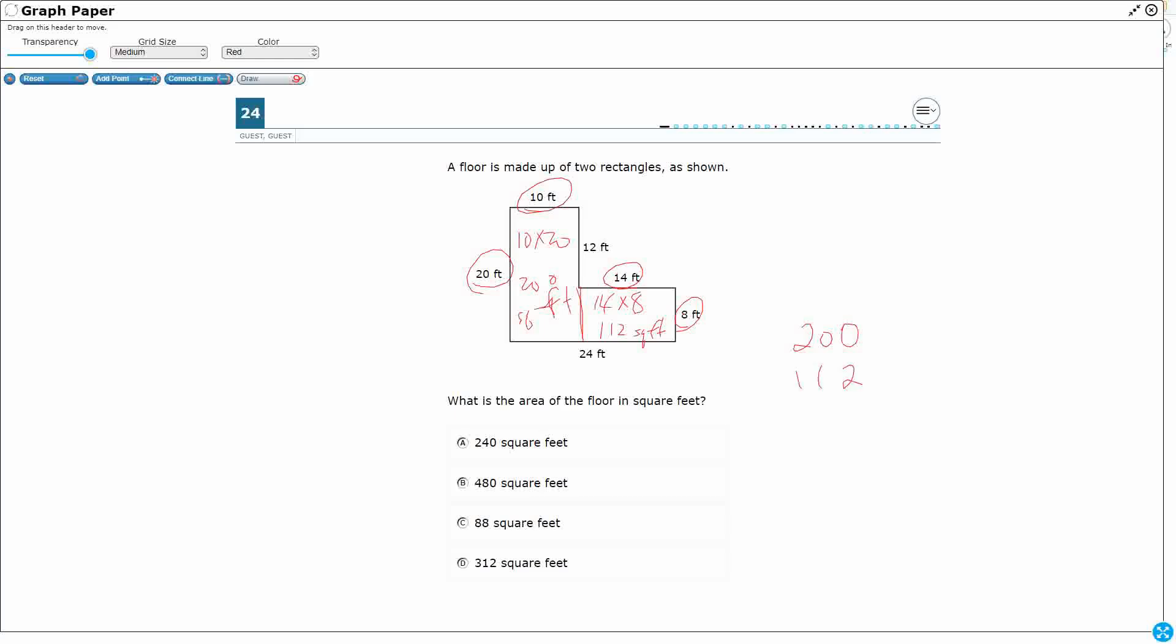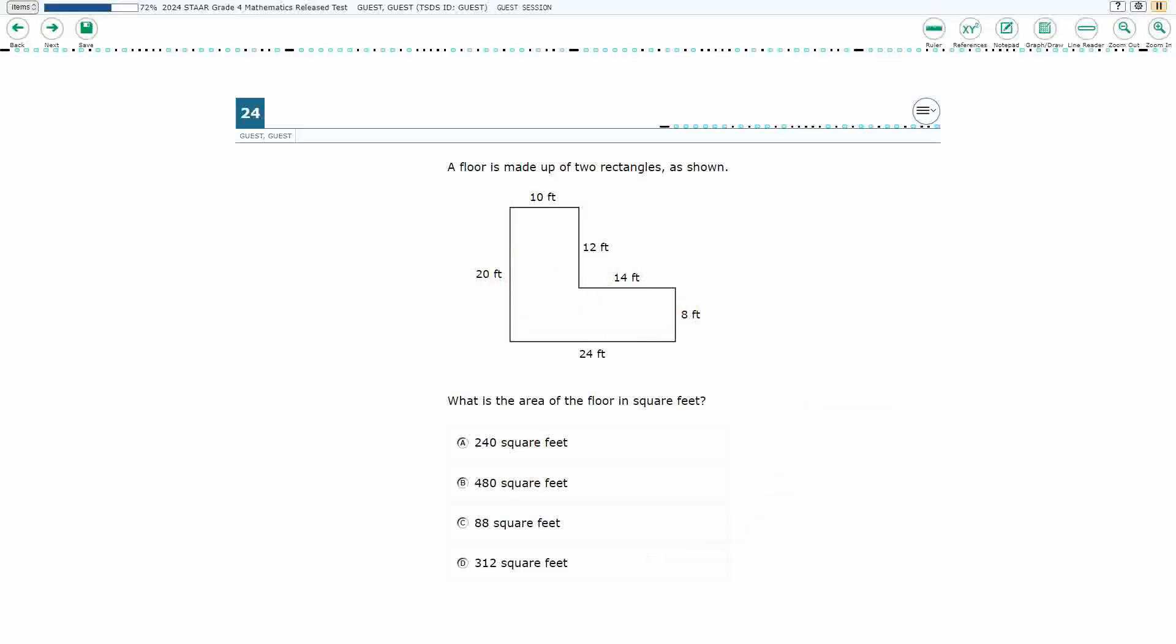And then guess what? You add those two: 200 square feet, 112 square feet. You're still going to get 312 square feet either way you cut that up. So your answer here is D.